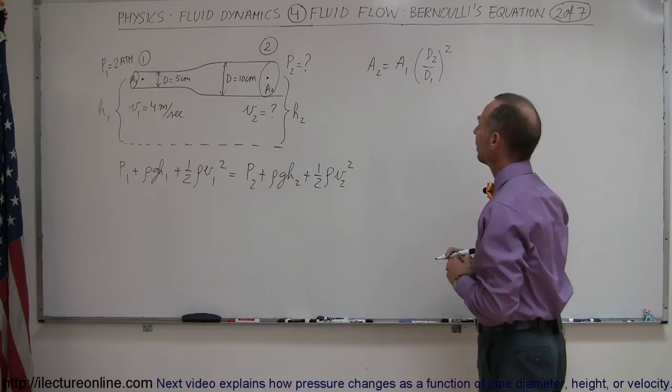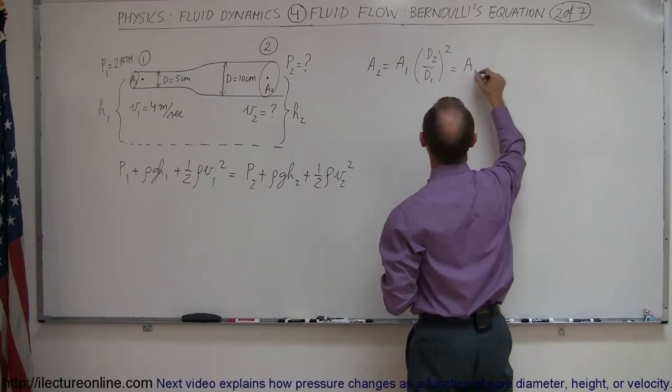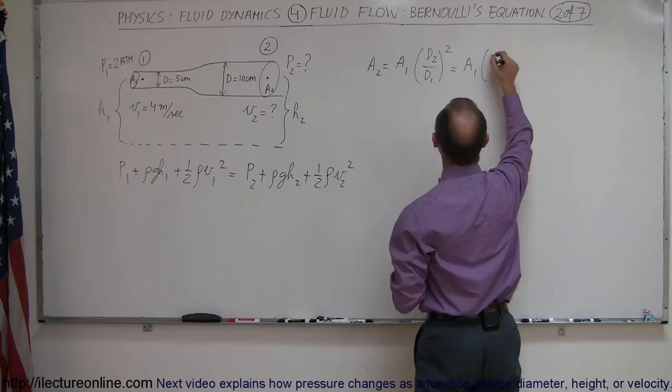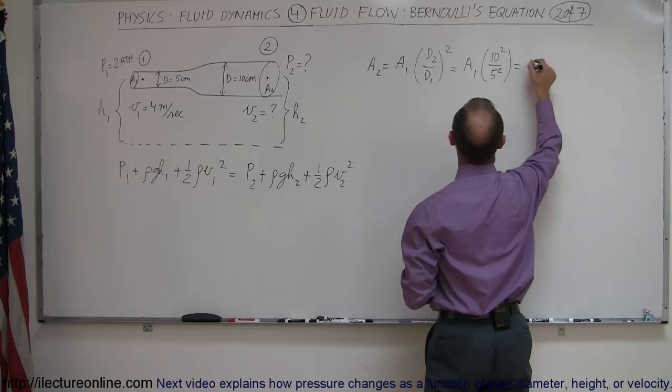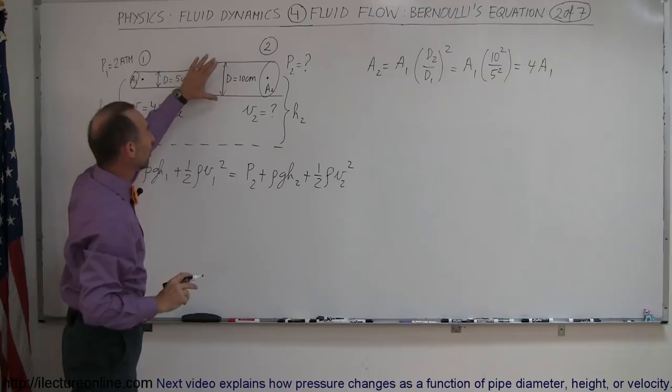If D2 is twice as big as D1, we can say that this is equal to A1 times 10 squared over 5 squared, that would be 100 over 25, or 4 times A1. So we can see by doubling the diameter of the pipe, we quadruple the cross-sectional area.